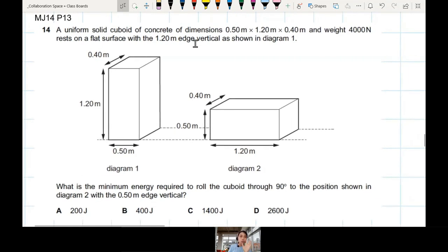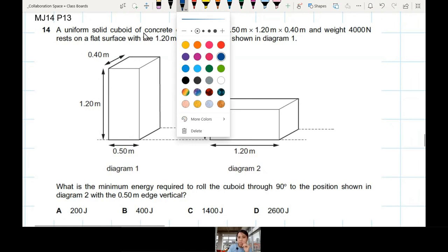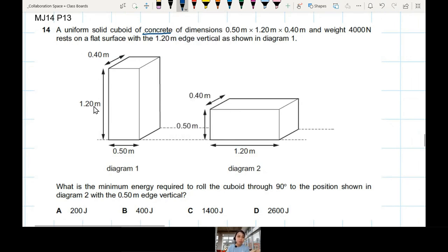A uniform solid cuboid of concrete, super heavy concrete. It's very big also, 1.2 meters, about up to your chest or shoulder depending on how tall you are, maybe your waist. Super heavy, weight 4000N, rests on a flat surface.